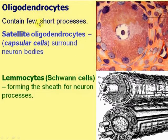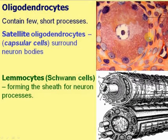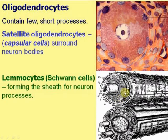Oligodendrocytes contain few short processes. They may be of two types: satellite oligodendrocytes, or capsular cells, which surround neuron bodies — especially large neurons — separating them and providing the optimal environment and feeding them. Schwann cells, or lemmocytes, are located at the periphery and form a sheath for neuron processes.